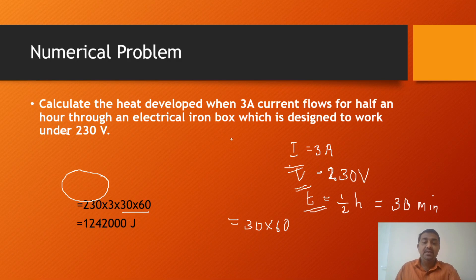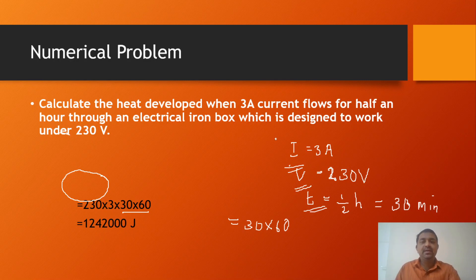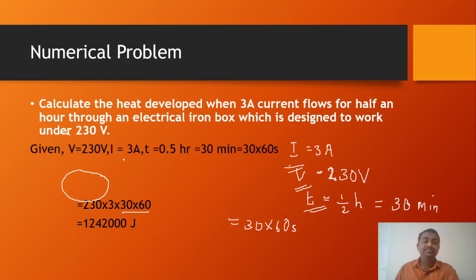A 3A current flows for half an hour through an electrical iron box which is designed to work under 230V. Given: I = 3A, V = 230V, T = 30 minutes = 30 × 60 = 1800 seconds. Using H = VIt, substituting values, the answer is 1,242,000 J.